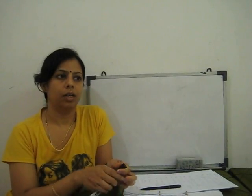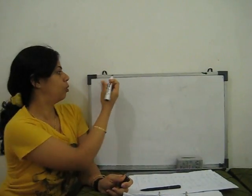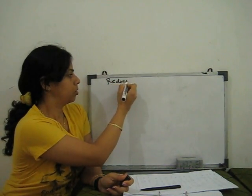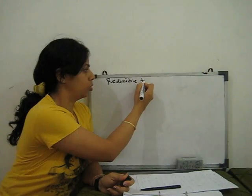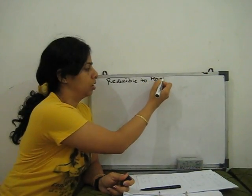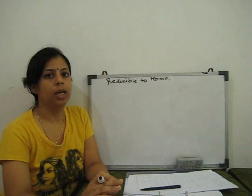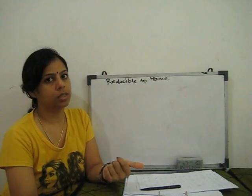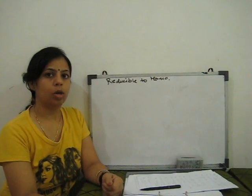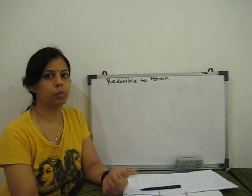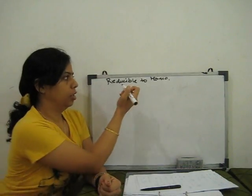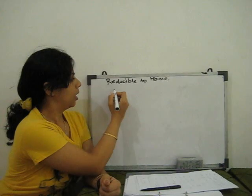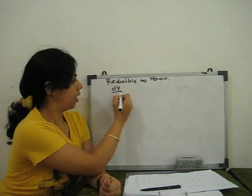In this lecture we learn how to solve the reducible to homogeneous equation — reducible to homogeneous in first order, first technique. In the last video we showed how to solve the homogeneous equation. If some equations are not homogeneous because there are some constants present, then how can we reduce them? Let us take one example.